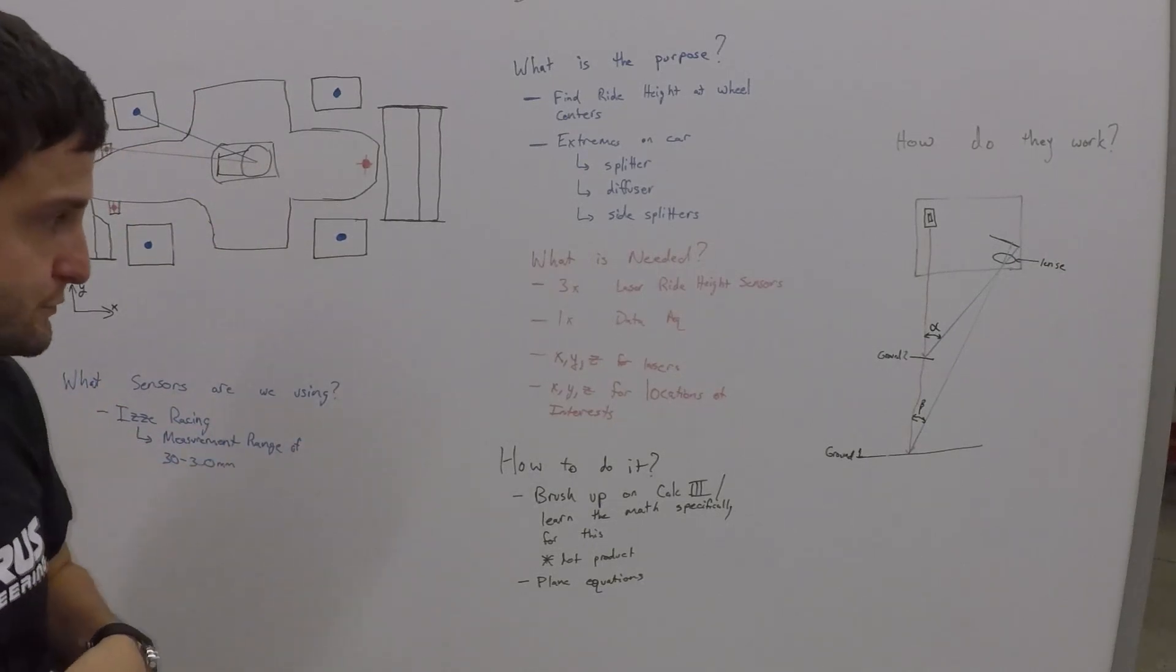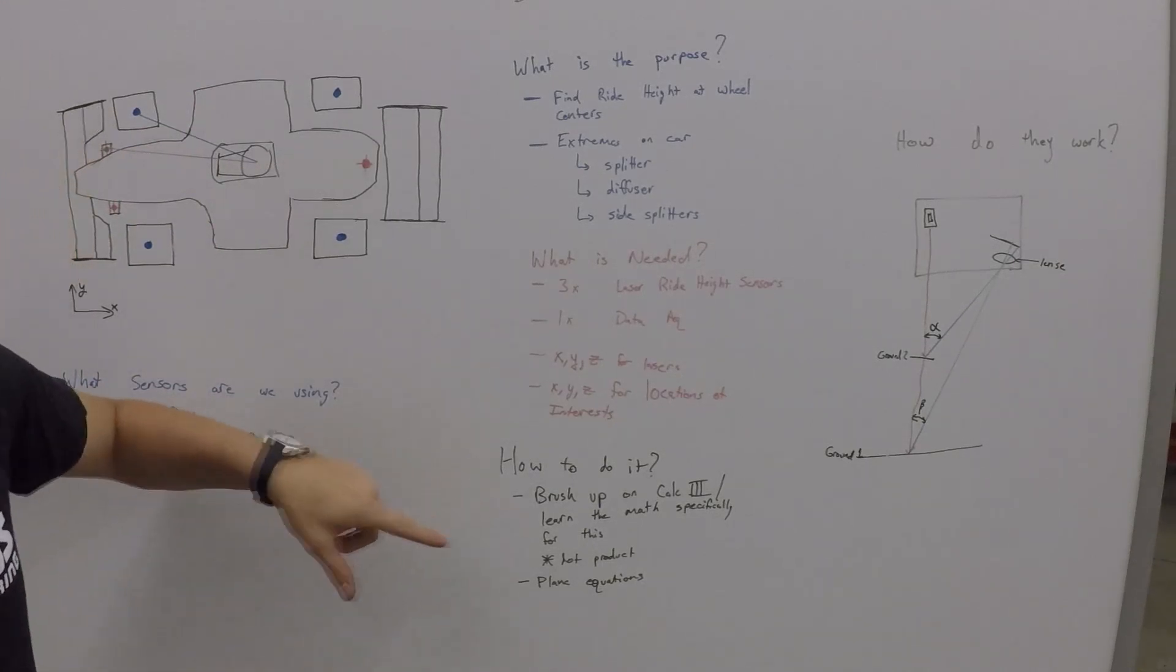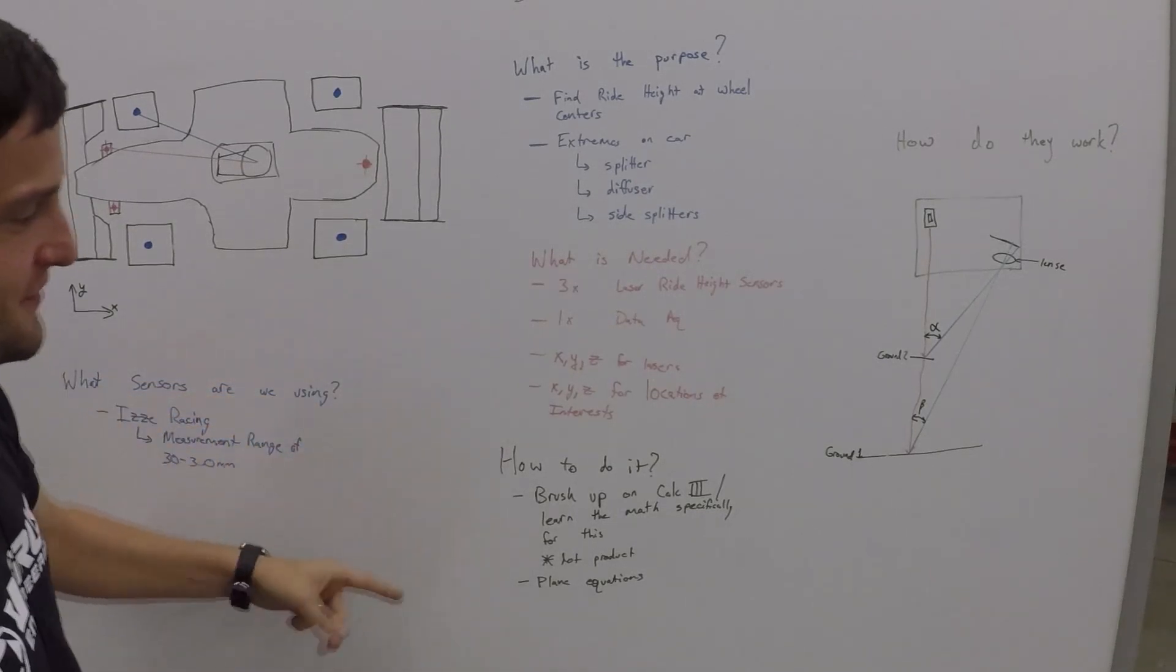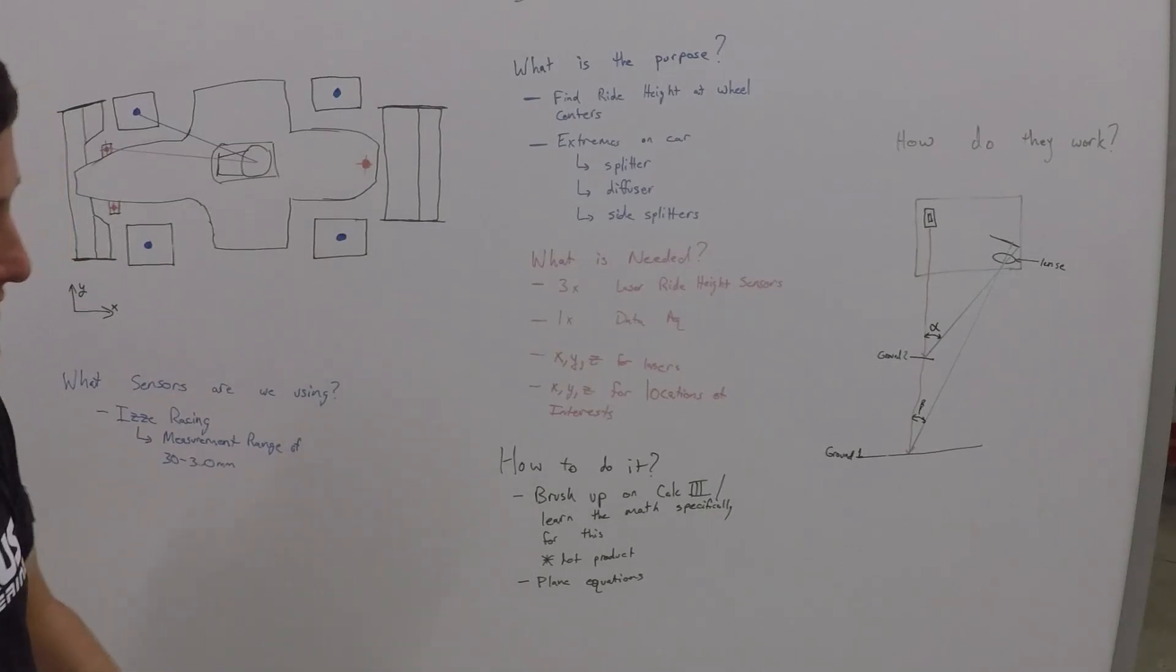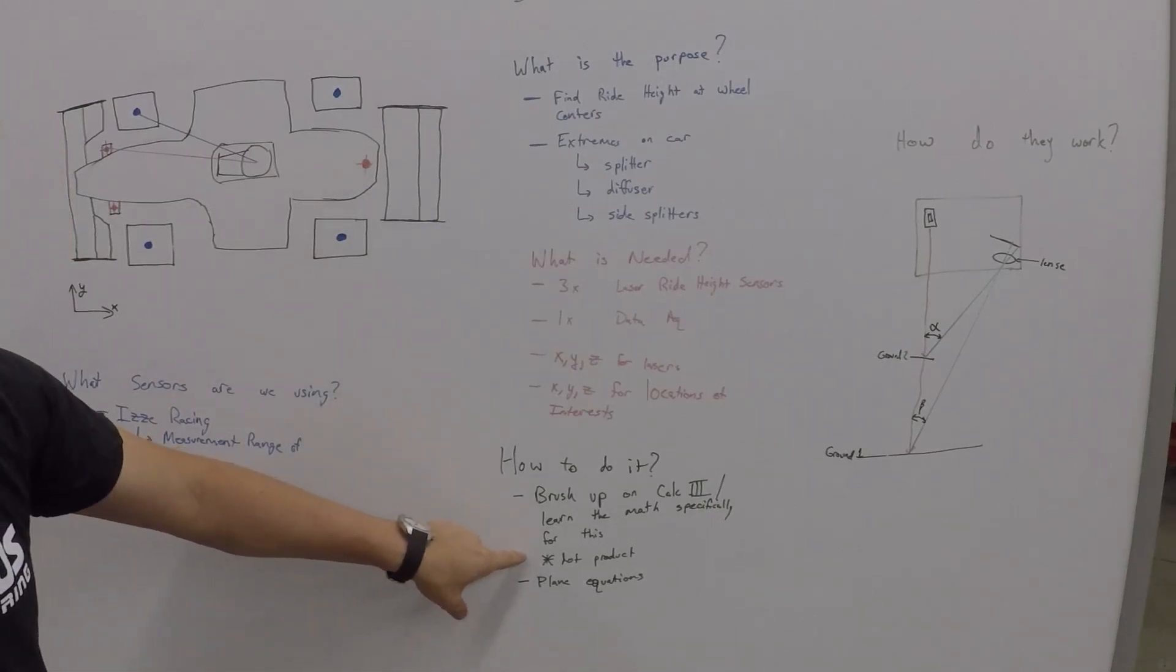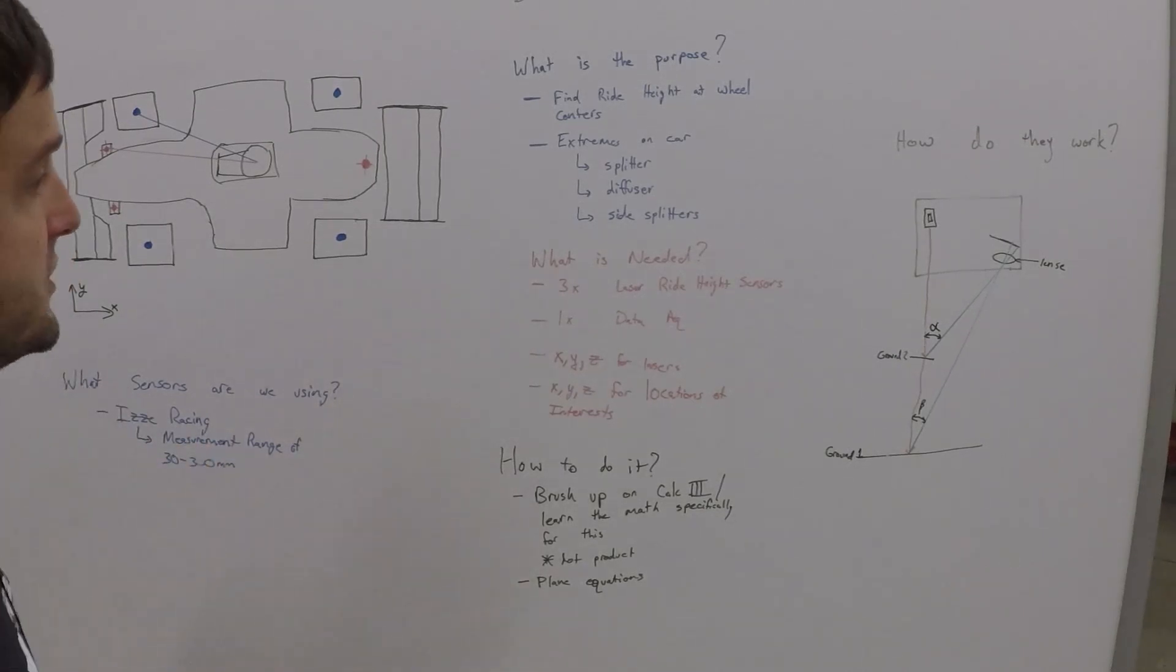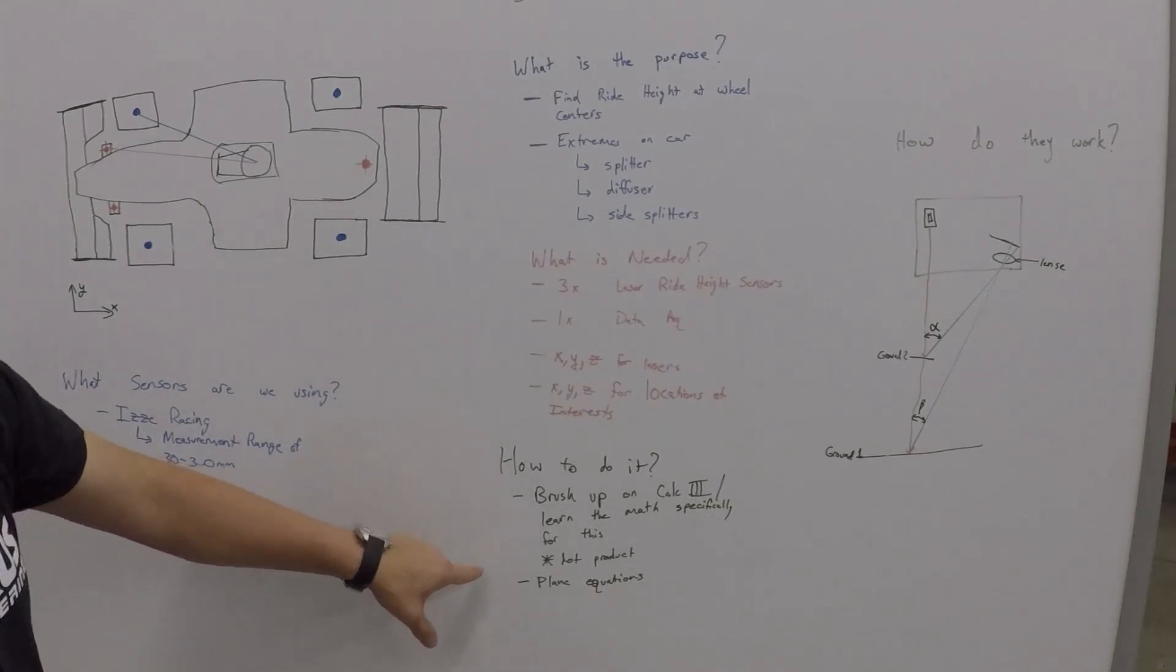How do you do it? Might want to brush up on calc three. If you took it, if you did not take it, then you can learn the specifics for how you actually calculate it. It's actually using the dot product. So if you look up like calc three and dot products, you can figure it out. It's called plane equations. It's actually not that hard. It's pretty easy. It's overall pretty basic math. It's actually algebra. What you solve is algebra.